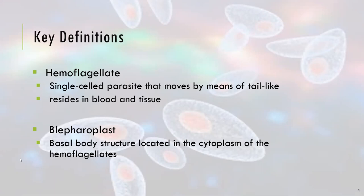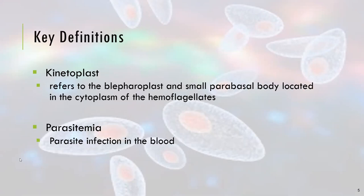When we say hemoflagellates, these are single-celled parasites that move by means of a tail-like projection called the flagella. Hemoflagellates reside in the blood and in the tissue of their host. There is what we call the blepharoplast, a basal structure located in the cytoplasm of the hemoflagellates. We also have the kinetoplast, referring to the blepharoplast and the small parabasal bodies located in the cytoplasm. Parasitemia is the presence of the parasite in the blood.